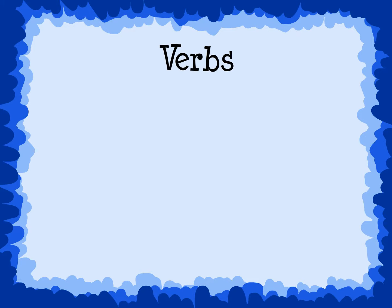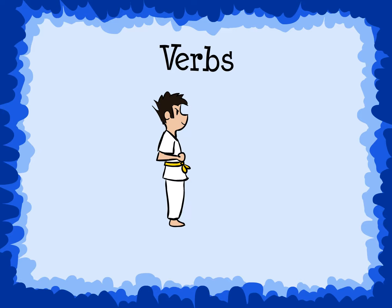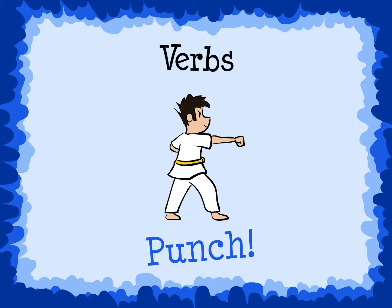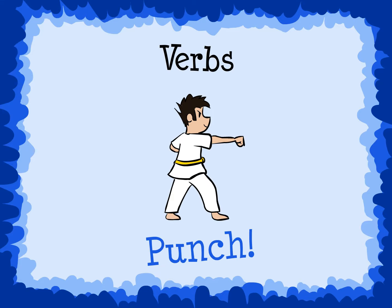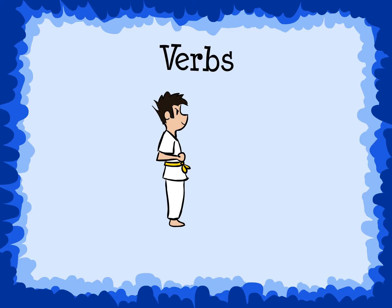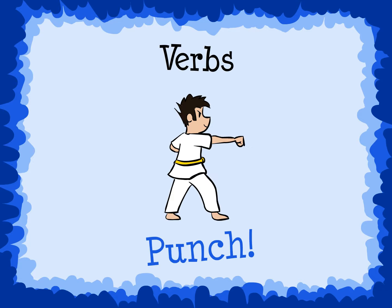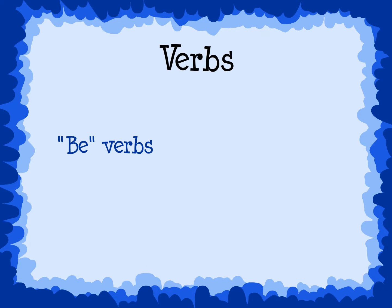Verbs, like nouns, are a very important part of our language. Anything a noun does is a verb. The verb is the action and it tells what the noun is doing. There are two main types of verbs: be verbs and action verbs.